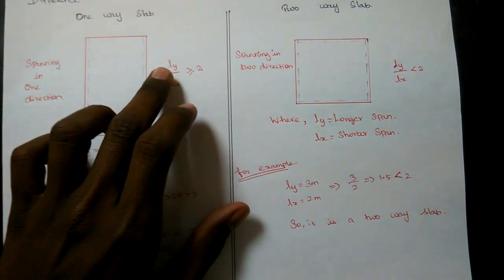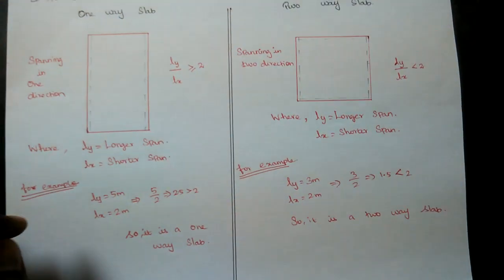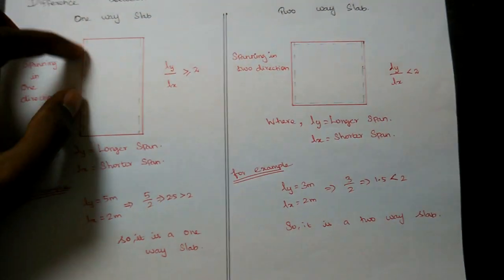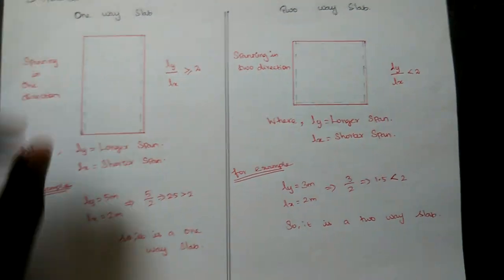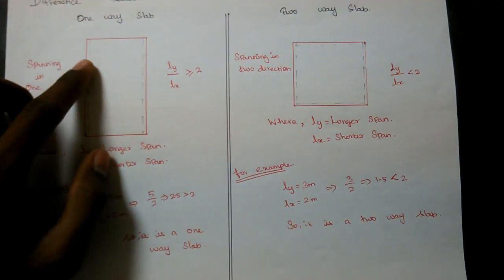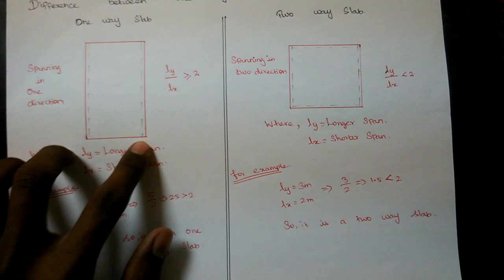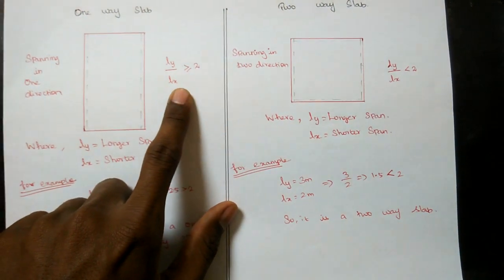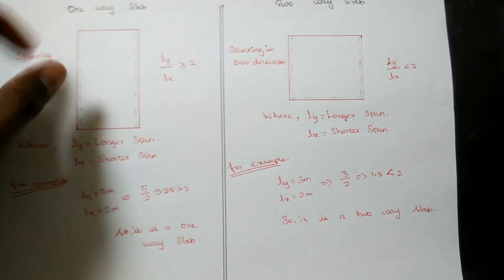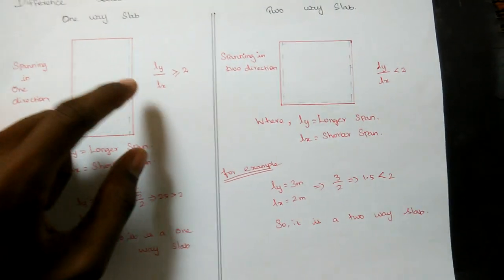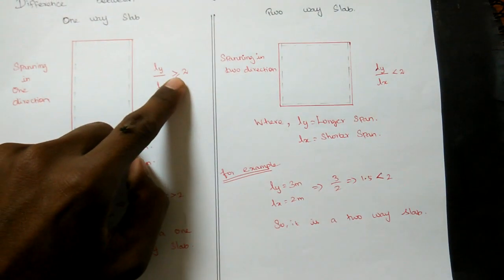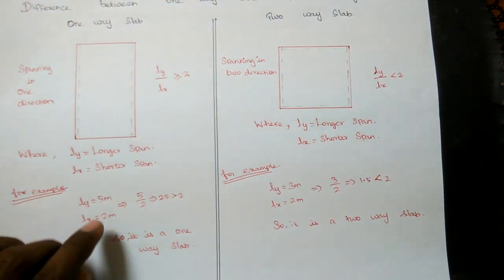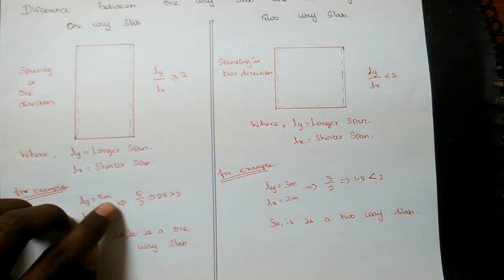Now, where Ly is the longer span and Lx is the shorter span. So for example, if one value is less than 2, it's a Two-Way Slab.